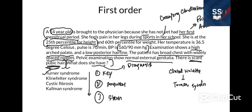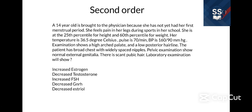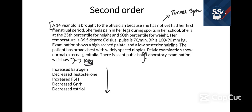Now let's look at the second-order question. The question stem is the same, so this patient has Turner's syndrome. However, Turner's syndrome is not in the answer choices — so this is a second-order question. They are asking what happens in Turner's syndrome. The answer is increased FSH.